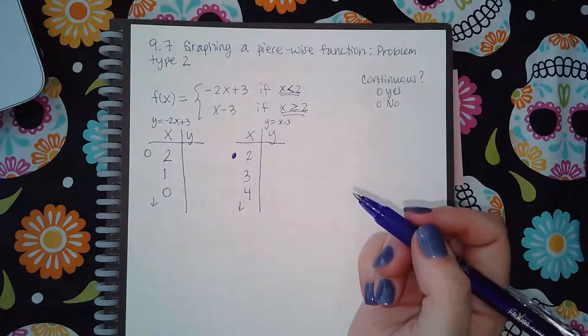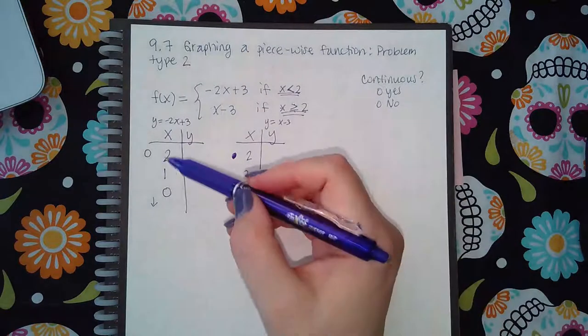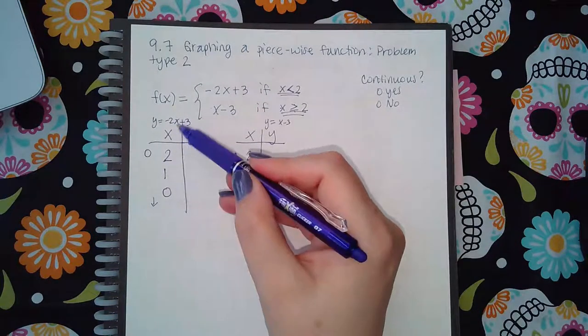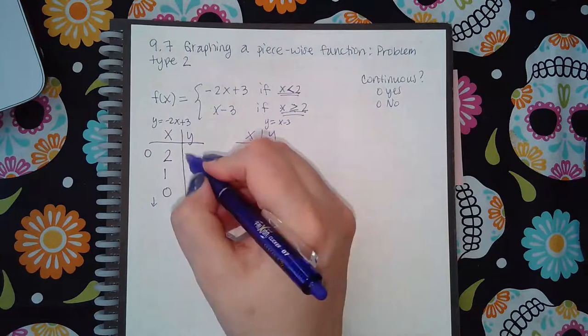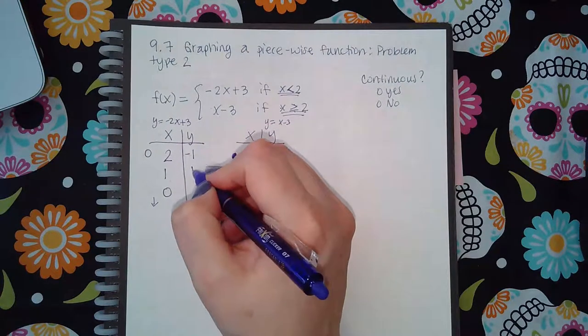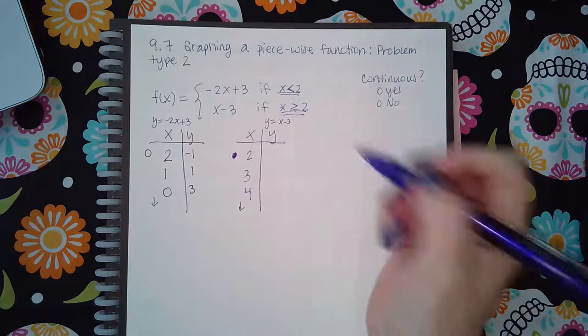Now I'm going to plug these numbers into this equation to figure out the y values. So I get negative 1, 1, and 3. Here I'm going to plug this into this function and I'm going to get negative 1, 0, and 1.